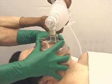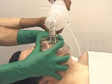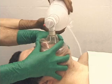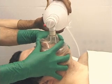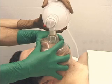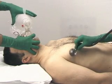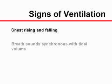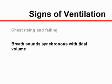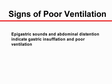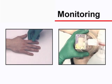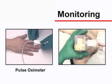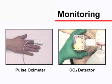In these situations, the mask can be held with two hands, with each hand positioned as described in the one-hand technique, while a second person compresses the bag valve device. Regardless of the technique used, adequate ventilation can be assessed by inspecting and auscultating the chest and abdomen. The chest rising and falling and breath sounds synchronous with the delivered tidal volume suggest adequate ventilation. Gurgling epigastric sounds and tympanic abdominal distension indicate gastric insufflation and poor ventilation. Other monitoring tools such as pulse oximeter and a carbon dioxide detector can be very valuable.